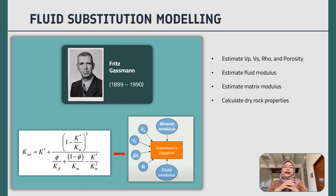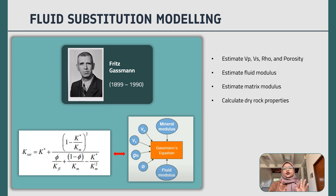To perform FSM, we use the Gassmann equation, introduced by geophysicist Fritz Gassmann. From Gassmann, we can estimate VP, VS, density, and porosity. Apart from that, we can also estimate the fluid modulus, estimate the matrix modulus, and calculate the dry rock properties.